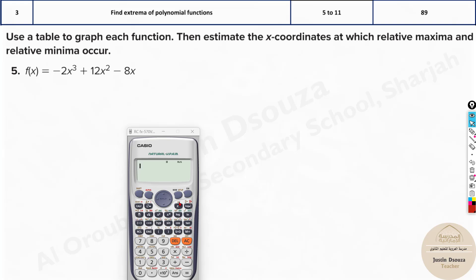Let's take our calculators and type mode and then option number 7 for table. Type this equation as it is. It's minus 2x cubed and then we have plus 12x squared and lastly minus 8x.